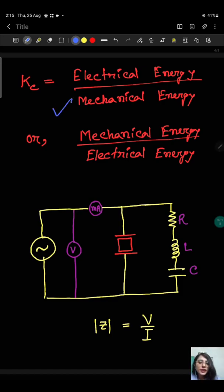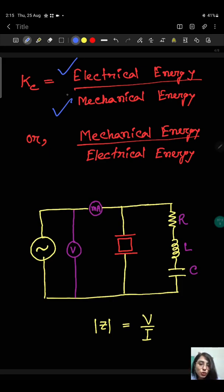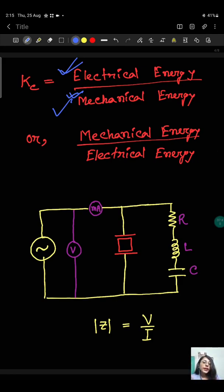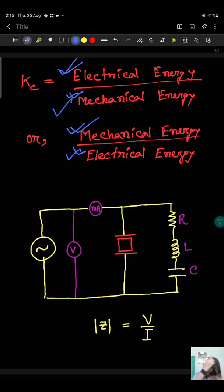The coupling coefficient indicates how much of the input energy is converted to the output energy. For the piezoelectric effect, it is electrical energy divided by mechanical energy — that is, how much of the mechanical energy is converted into electrical energy. For the inverse piezoelectric effect, it is how much of the electrical energy is converted into mechanical energy.